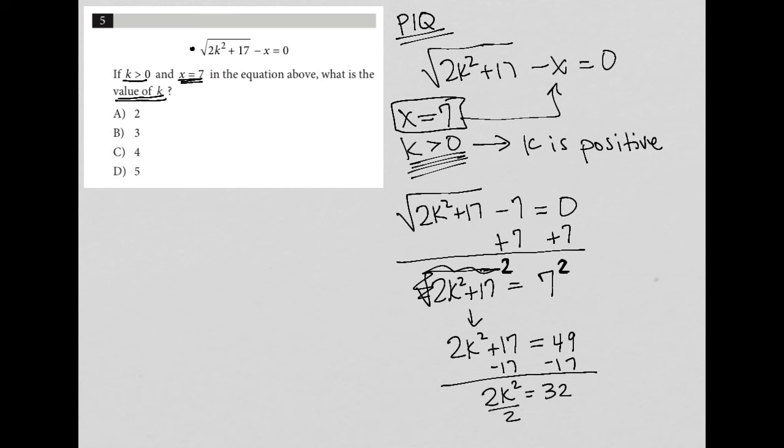Dividing both sides by 2 leaves me with k squared equals 16. When I square root both sides, I get k equals plus or minus 4. That's where the k is positive comes in.